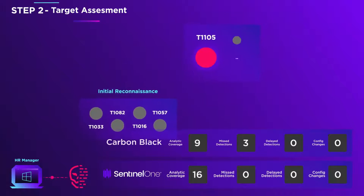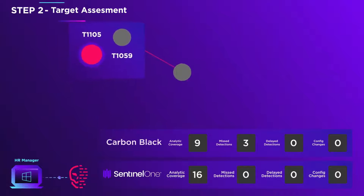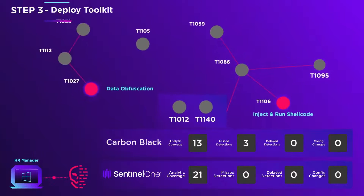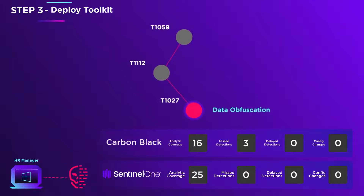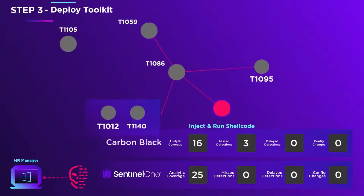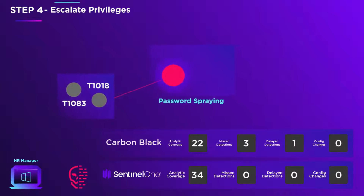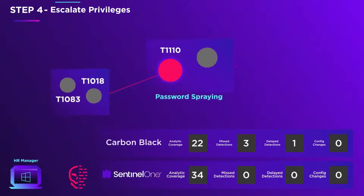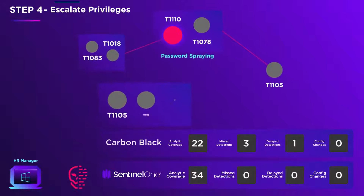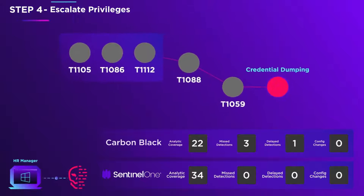He downloads a tool from his C2 server, takes a screenshot of the HR manager's PC, then uploads the image back to his C2. The adversary deploys a malicious toolkit onto the PC and modifies the registry to provide mechanisms to utilize various components. EvilHacker now initiates brute force credential access techniques, probes the network, and tests the stolen credentials on other hosts. More malware and scripts are downloaded from the C2 that are used to dump the PC credential database.